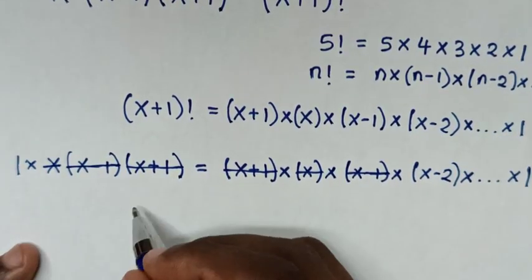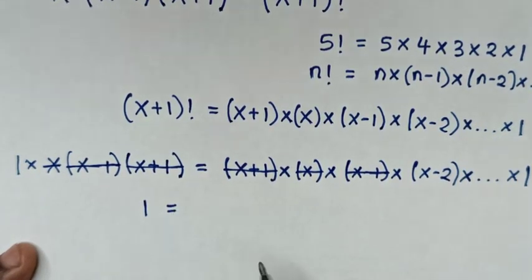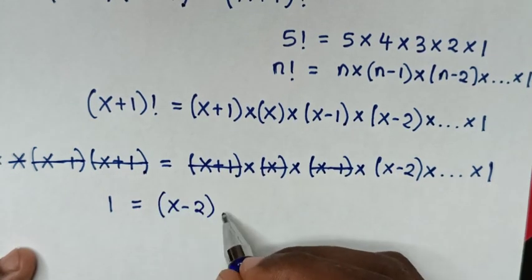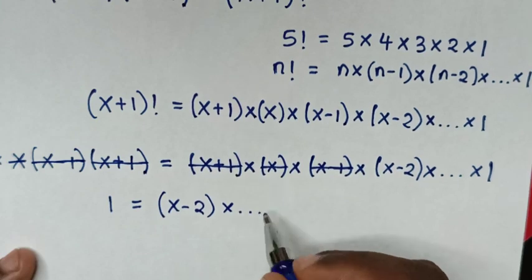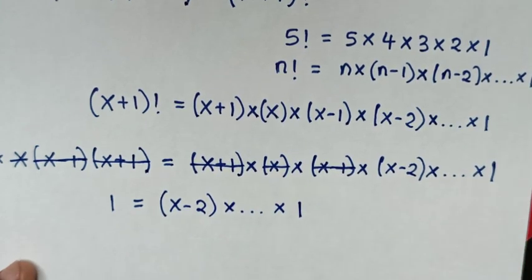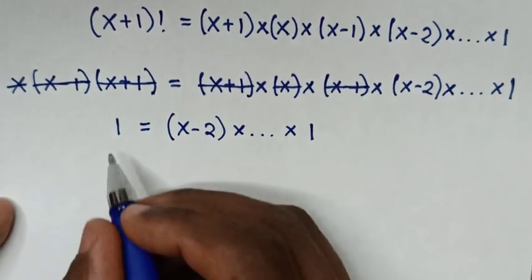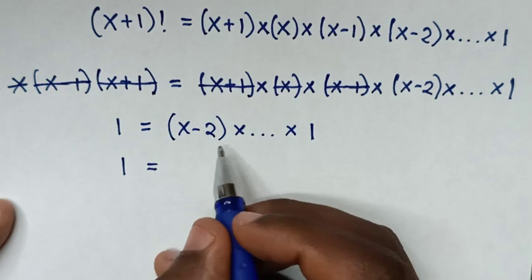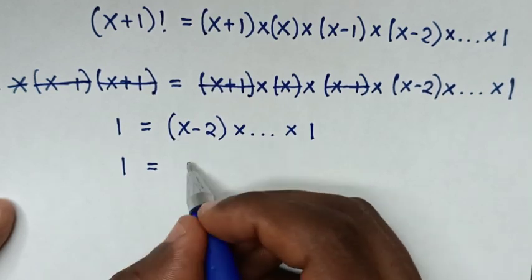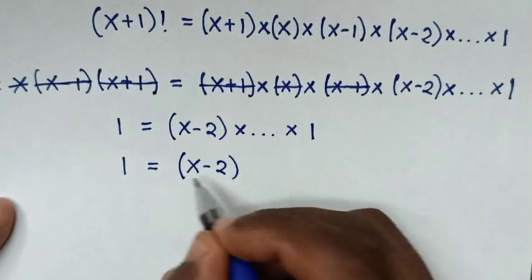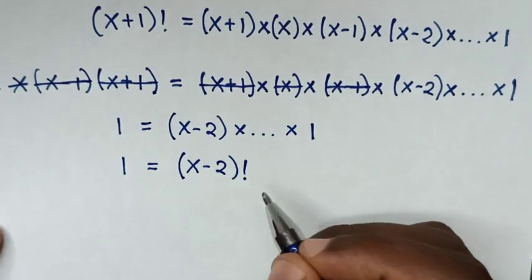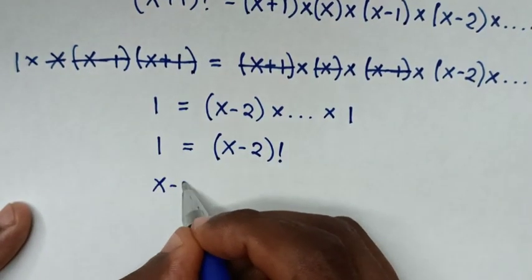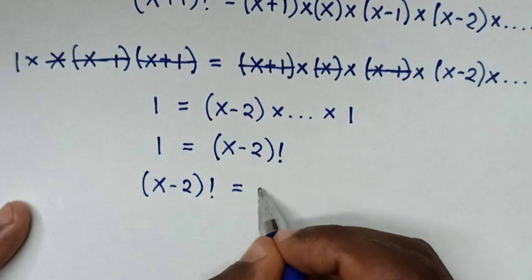So our equation on this side simplifies to 1, and on the other side we have (x minus 2) times (x minus 3) times ... times 1. In the next step, 1 equals (x minus 2) times down to times 1, which is the same as (x minus 2) factorial. Moving terms, we get (x minus 2) factorial equals 1.